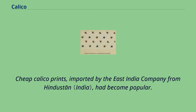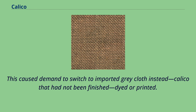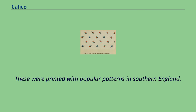Cheap calico prints, imported by the East India Company from Hindustan, had become popular. In 1700, an Act of Parliament was passed to prevent the importation of dyed or printed calicos from India, China or Persia. This caused demand to switch to imported grey cloth instead — calico that had not been finished, dyed or printed. These were printed with popular patterns in southern England.